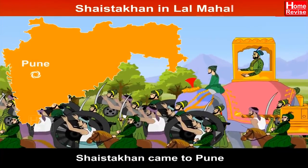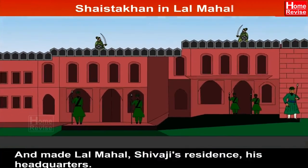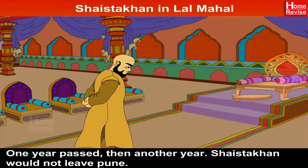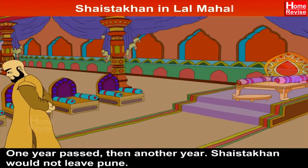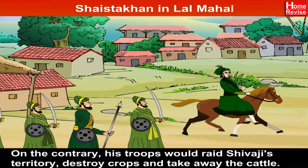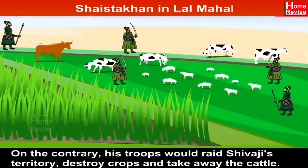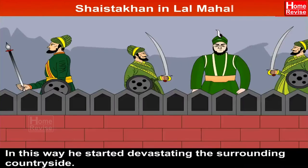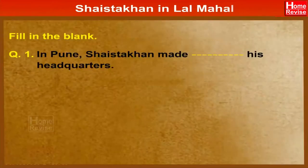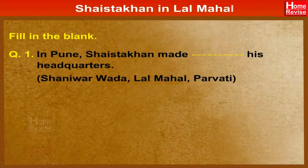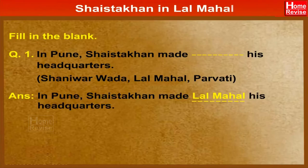Shaistakhan came to Pune and made Lal Mahal, Shivaji's residence, his headquarters. One year passed, then another year — Shaistakhan would not leave Pune. On the contrary, his troops would raid Shivaji's territory, destroy crops and take away the cattle. In this way he started devastating the surrounding countryside. In Pune, Shaistakhan made Lal Mahal his headquarters.